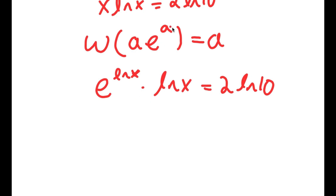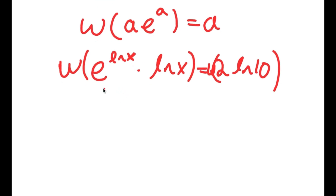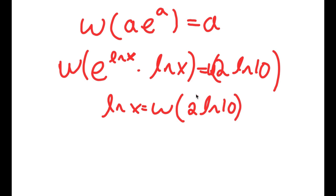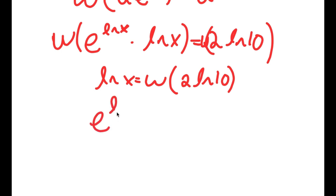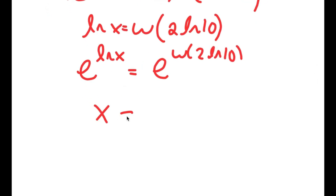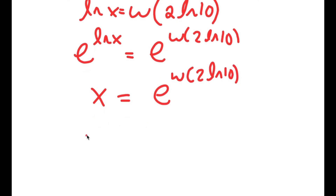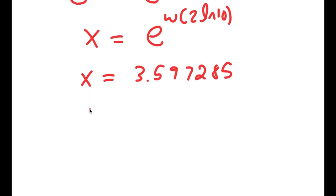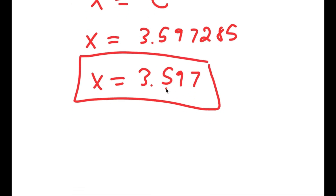If I take the Lambert W function on both sides, this results in ln x equaling W of 2 times ln 10. Now if I take e to the power of both sides, I get e to the power of ln x is equal to e to the power of W of 2 ln 10. And e to the power of ln x equals x. So I get x is equal to e to the power of W of 2 times ln 10, which is equal to 3.597285, rounding to 3.597. So this is my answer.